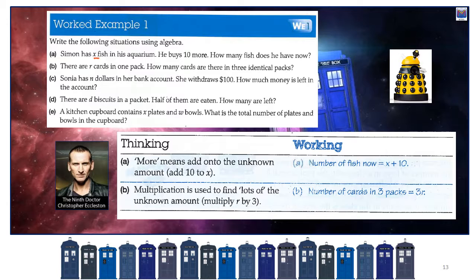Simon has x fish — this is like our Fantails example from before. He buys 10 more. How many fish does he have? He started with x and then we're adding on 10 more because he's buying 10 more. The number of fish equals x plus 10, and that becomes our equation, our formula — our mathematical statement to describe the number of fish he's got.